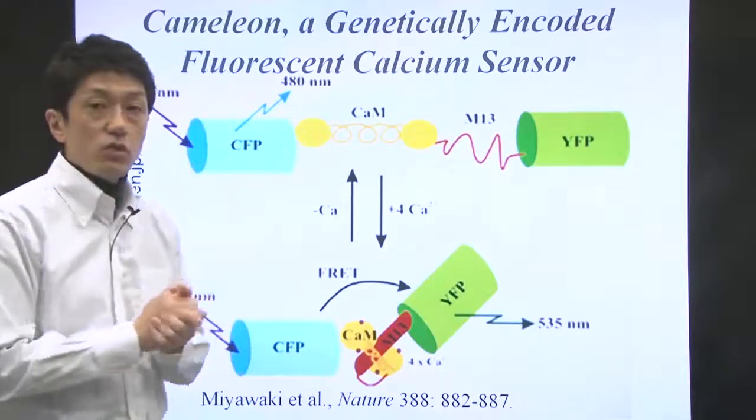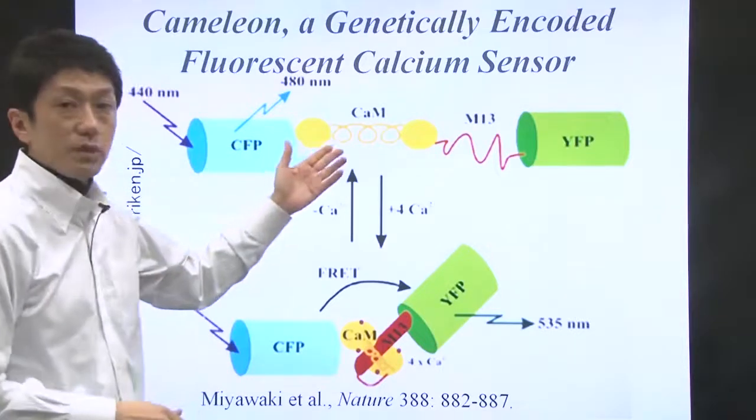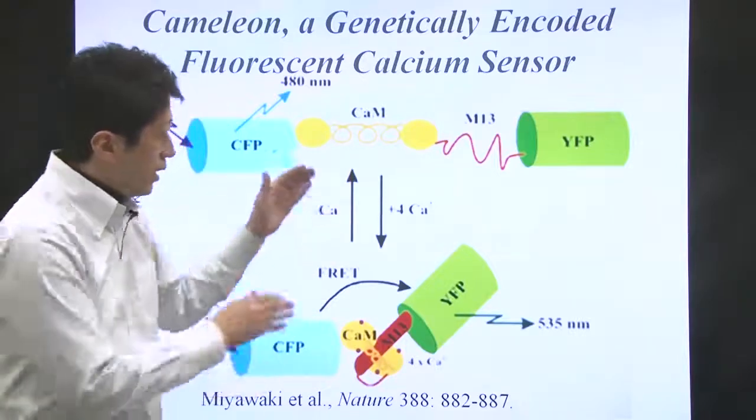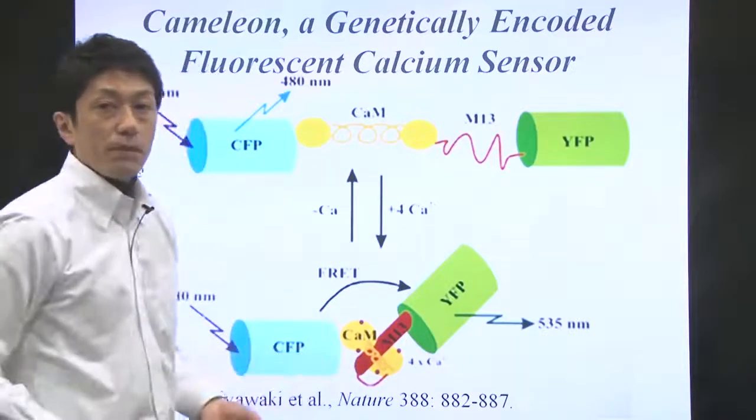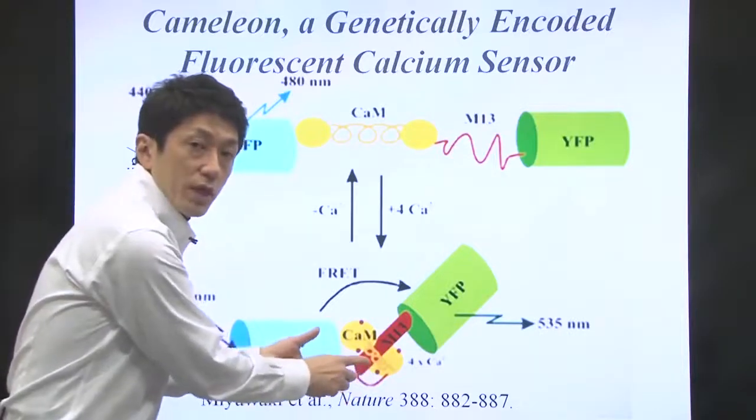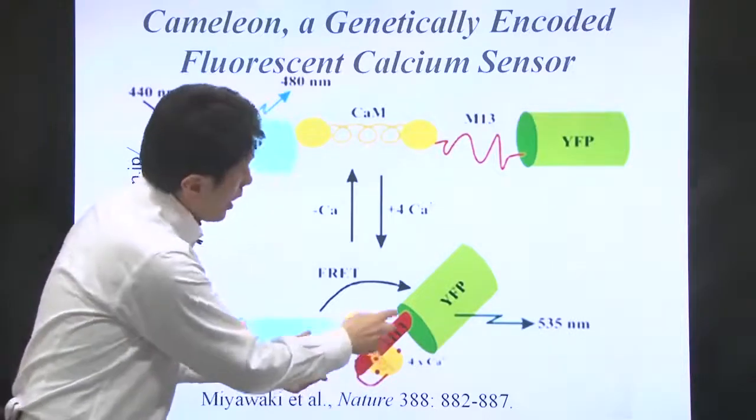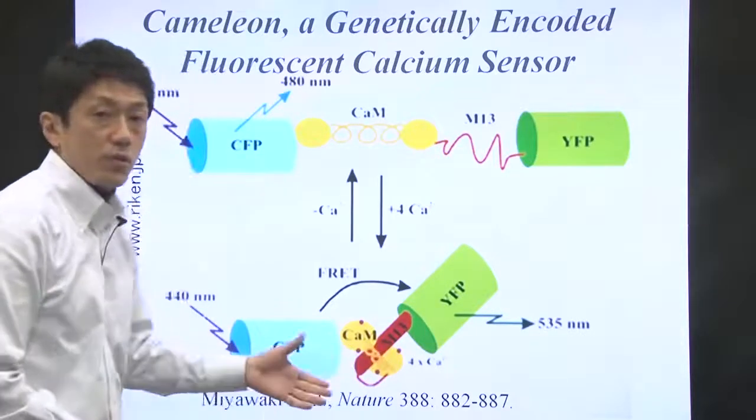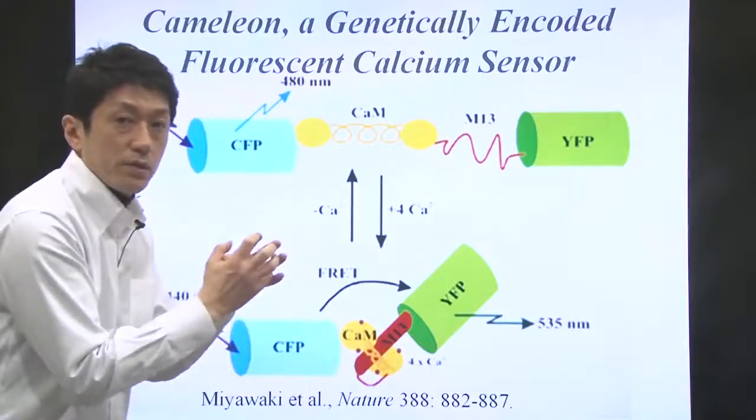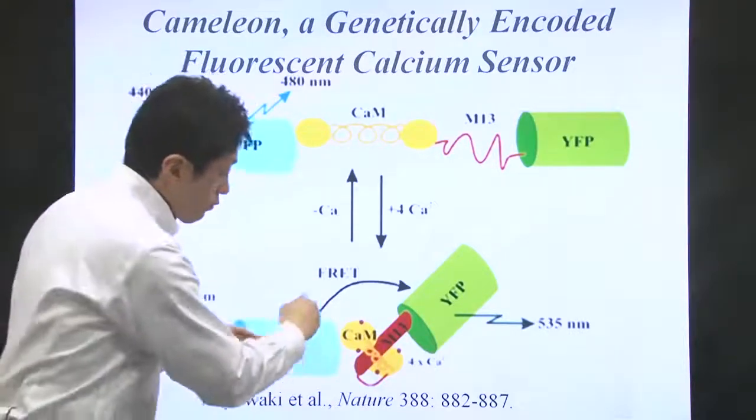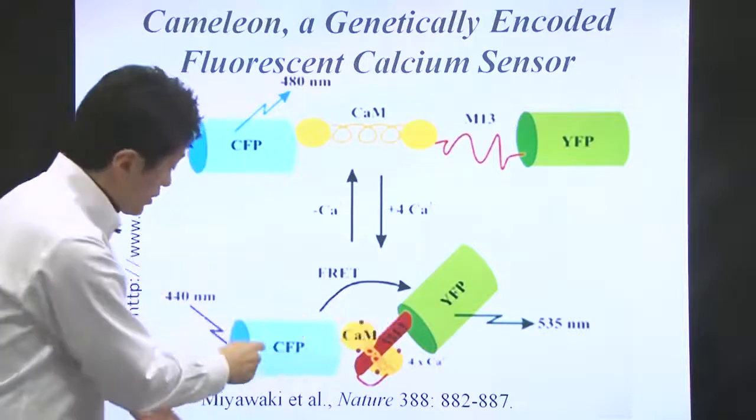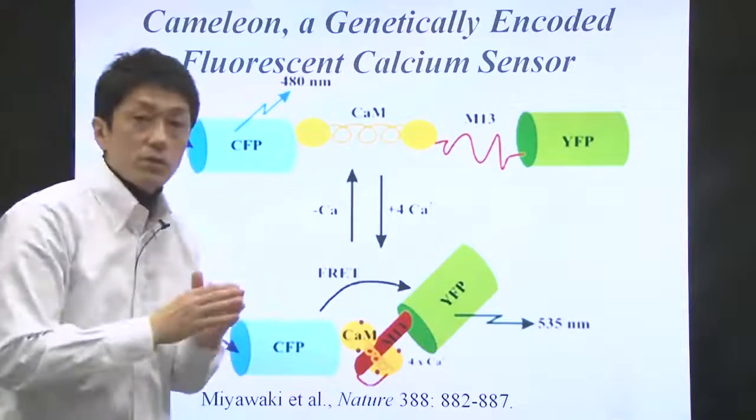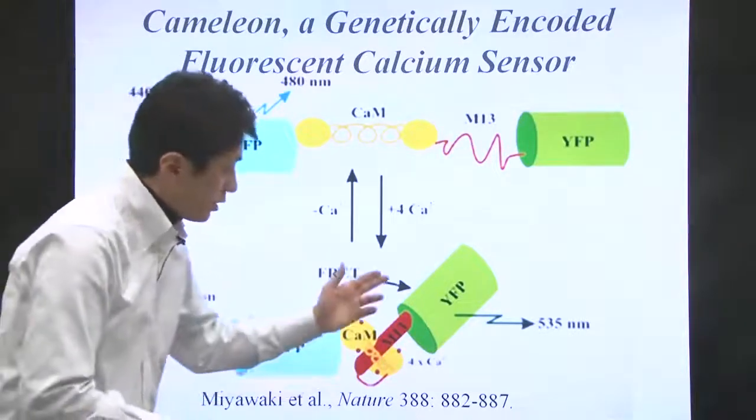In the presence of calcium, the calmodulin segment binds to four calcium ions and folds. The calcium-bound calmodulin is able to bind to M13 peptide right next to it. The structure of chameleon becomes compact enough for FRET between CFP and YFP. Therefore, in the presence of calcium ions, you observe yellow emission.